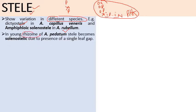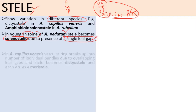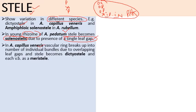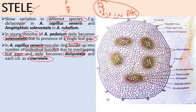In the amphiphloic solenestele, the xylem is surrounded on both sides by phloem. In Adiantum rubellum it consists of: outer endodermis, outer pericycle, outer phloem, xylem, inner pericycle, inner endodermis, and a central parenchymatous pith. In Adiantum pedatum, in the young rhizome the stele becomes solenestelic due to the presence of a single leaf gap. In Adiantum capillus-veneris, the vascular ring breaks into small pieces due to overlapping leaf gaps, forming individual vascular bundles called meristeles, and the stele becomes a dictyostele.